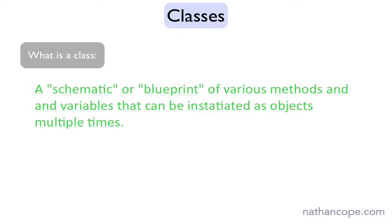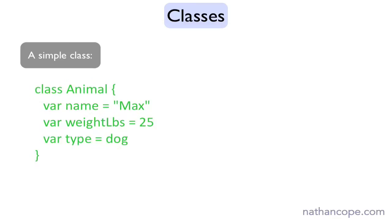Let's take a look at what the syntax is to define a simple class. A simple class that defines an animal type can be seen here. The variables in this class are called properties.